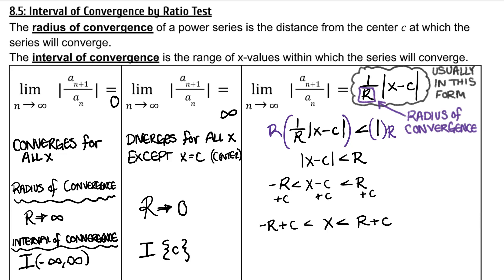This makes our interval of convergence (−r + C, r + C). For the geometric series test, the absolute value of your common ratio must be less than 1. But for the ratio test, less than 1 gives you a convergent series.